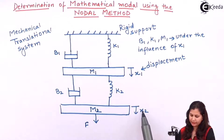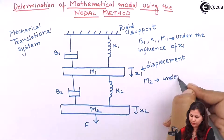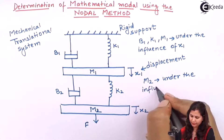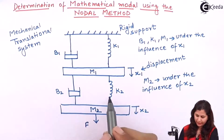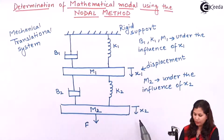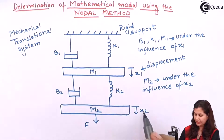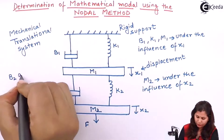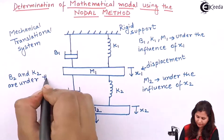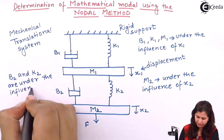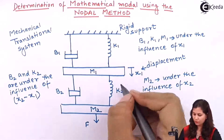Similarly, this mass M2 will be under the influence of this displacement X2. Now, these two elements B2 and K2 are connected between X1 and X2. So they will be affected by — or under the influence of — the difference of these displacements, X2 minus X1.